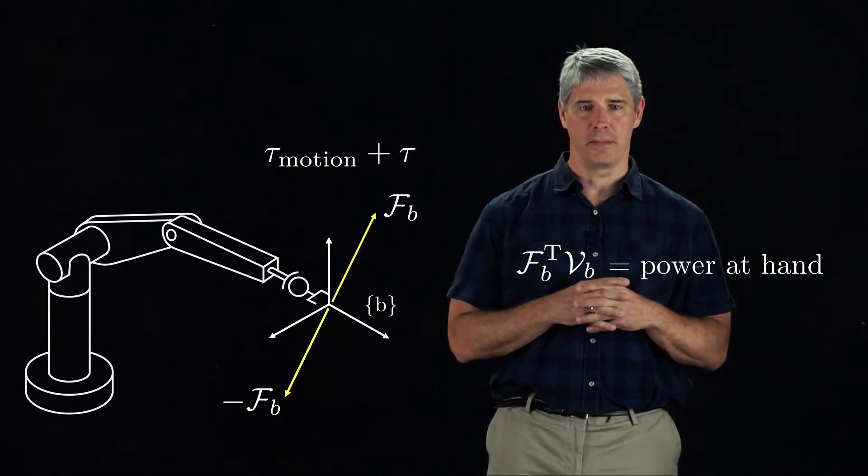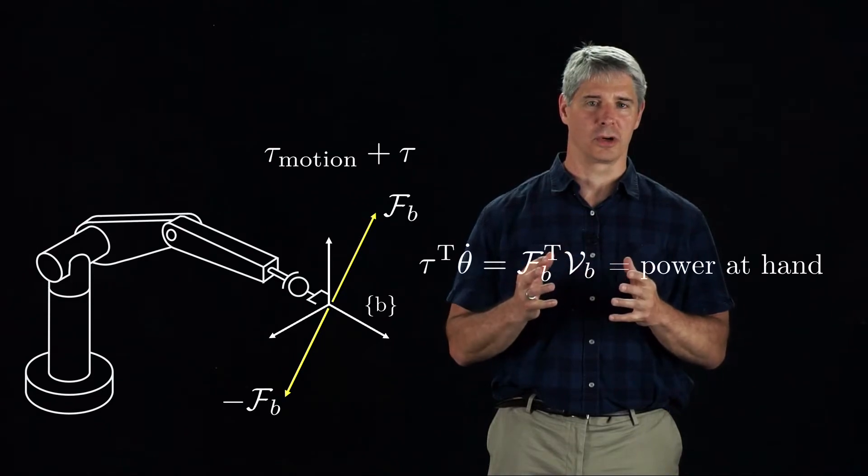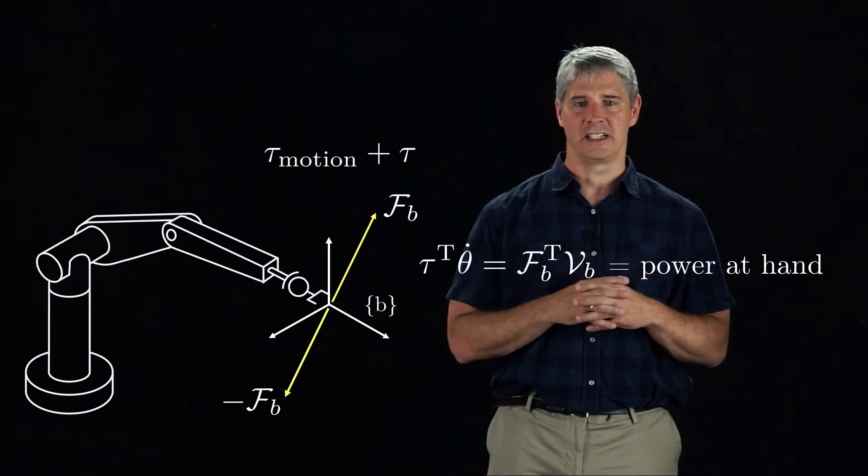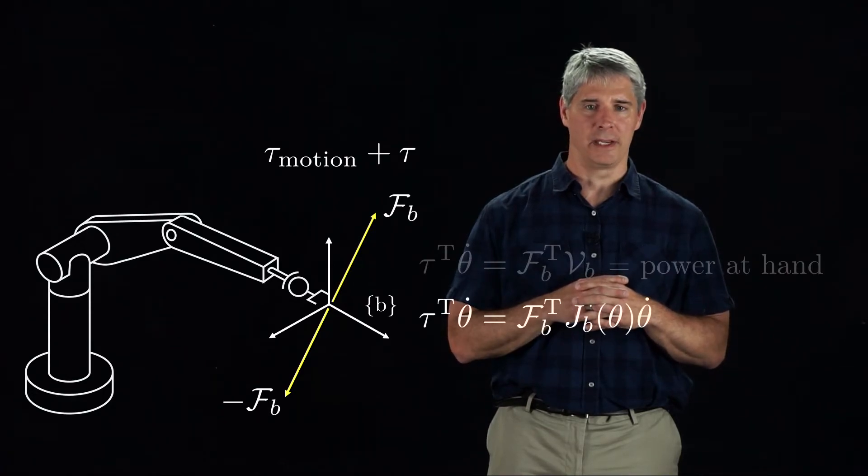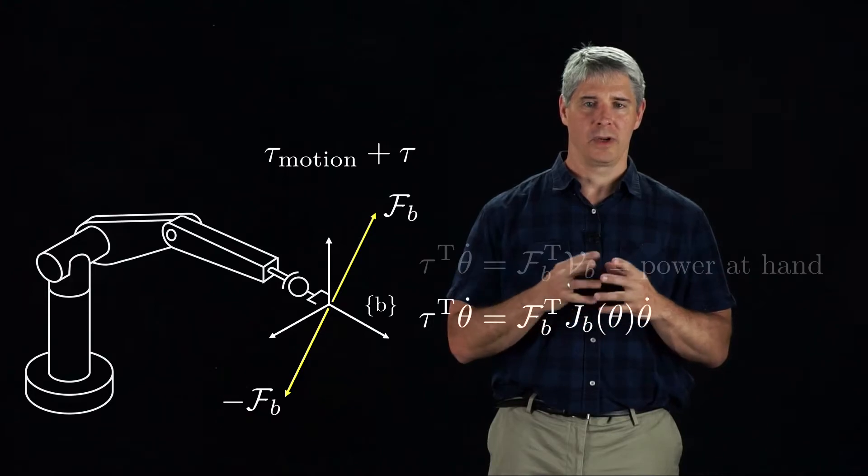This power must be coming from the motors, and we know that the power produced or consumed by the motors is the joint torques dotted with the joint velocities. If we plug in the identity Jb theta dot equals Vb, and recognize that the equality must hold at all theta dot, we get this equation.